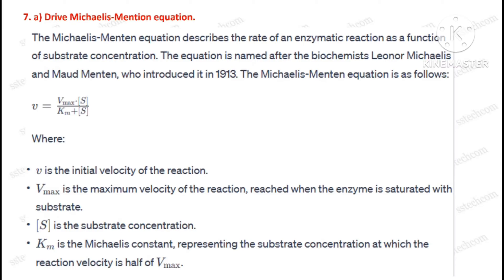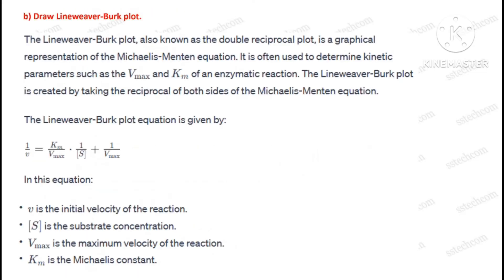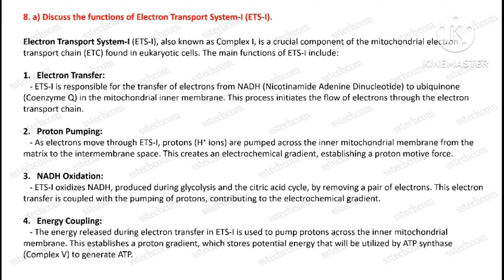Question number seven, first part: derive the Michaelis-Menten equation. Second part: draw the Lineweaver-Burk plot. Question number eight, first part: discuss the functions of the electron transport system.